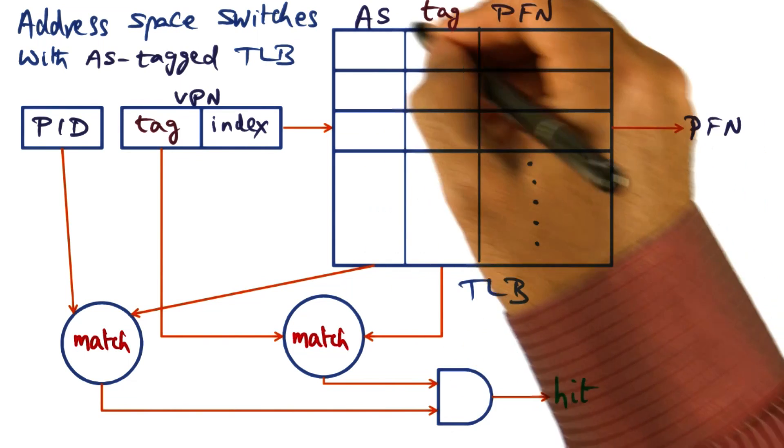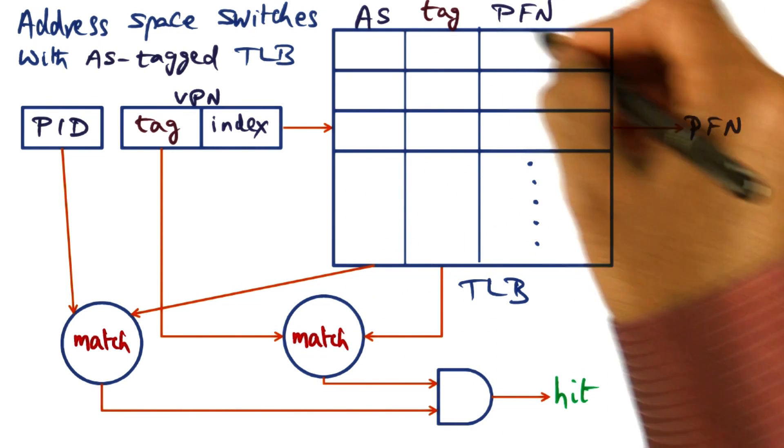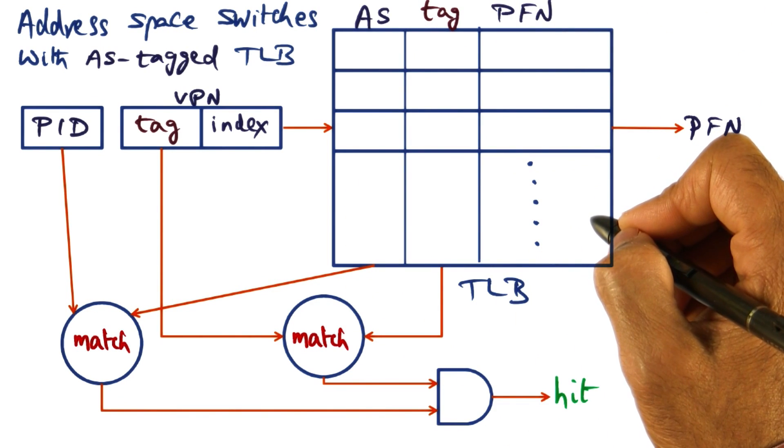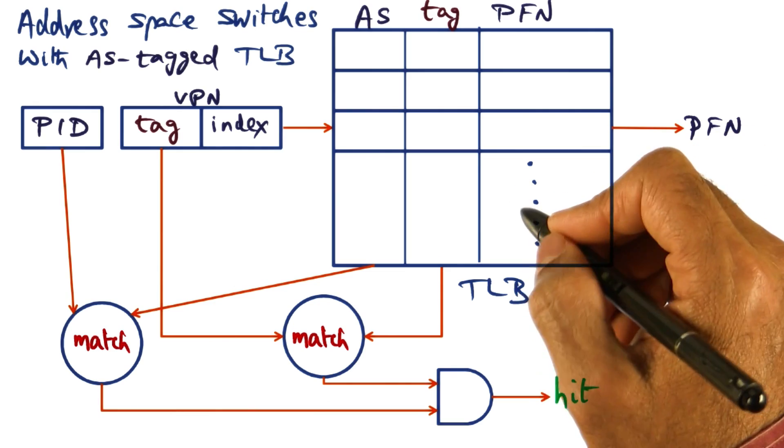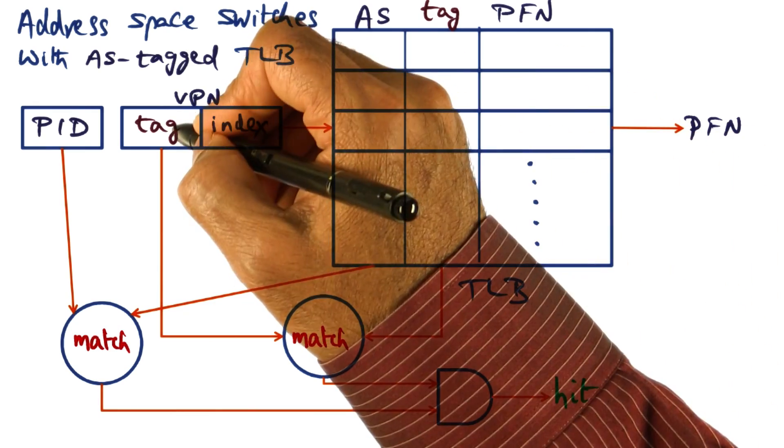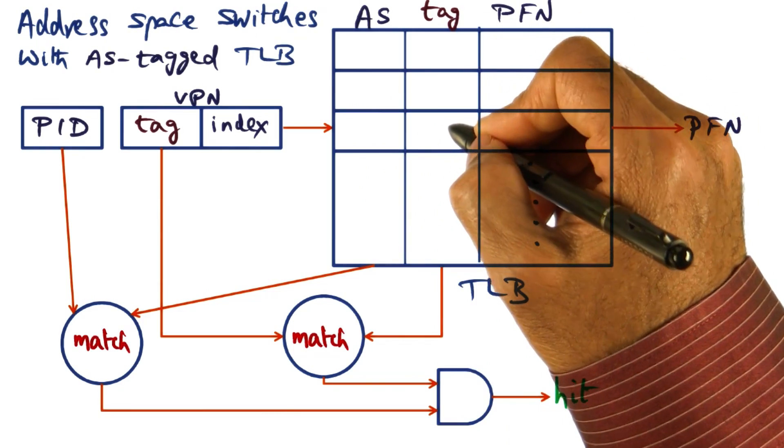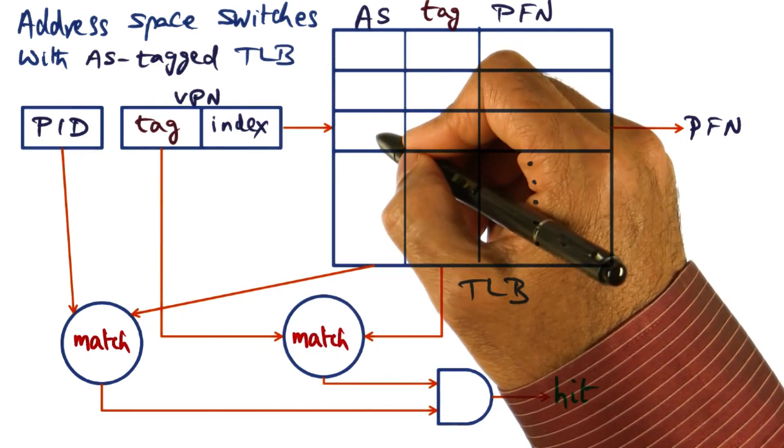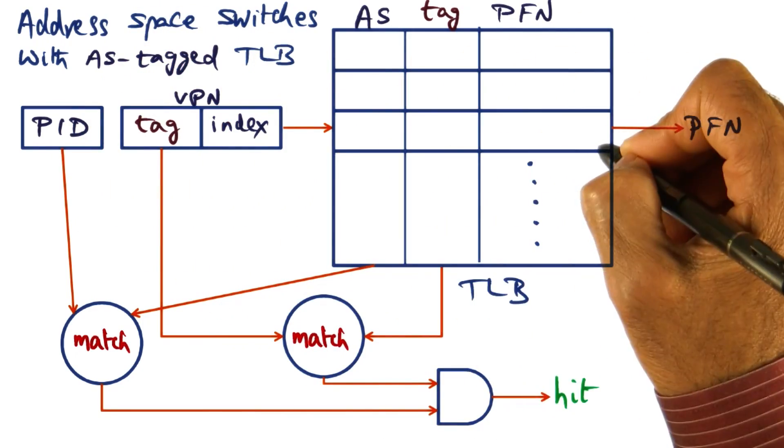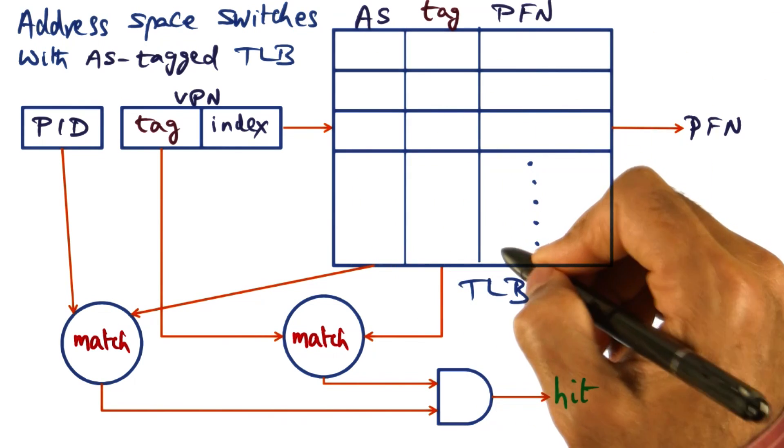When we make an entry into the TLB, we store not only the tag associated with a particular virtual address, but also the PID of the process for which we are creating this entry.